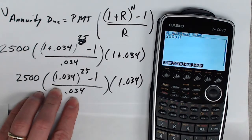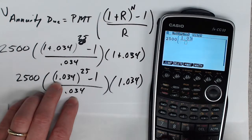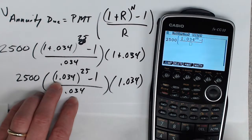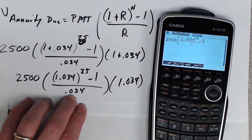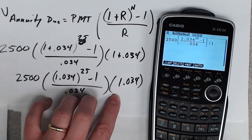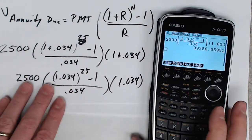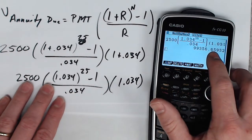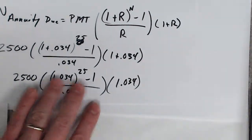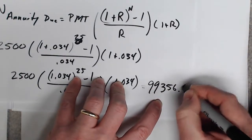2500, parentheses, fraction. 1.034 to the 25th power. Minus 1. All over .034. 1.034 times 1.034. I want to put $99,356.66. You round to the nearest penny for these. So we wound up with $99,356.67.